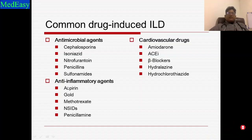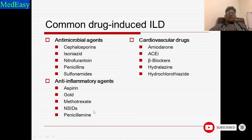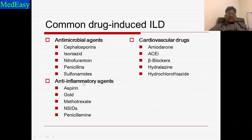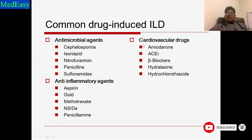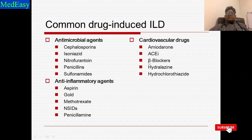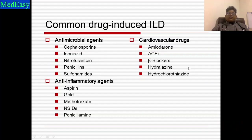Other drug causes include penicillin, sulfonamides, aspirin, gold, methotrexate, NSAIDs, and penicillamine — common anti-rheumatic drugs used chronically for months to years. Cardiovascular drugs: amiodarone is well-known for causing pulmonary fibrosis. Even ACE inhibitors, beta blockers, and hydrochlorothiazide are also implicated in causing pulmonary fibrosis and ILD over time.